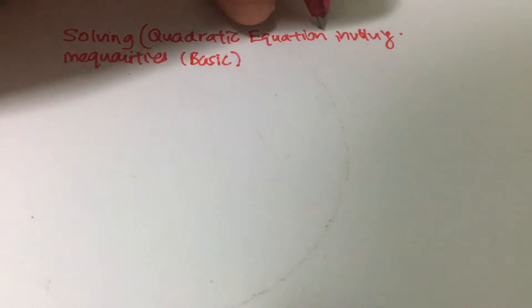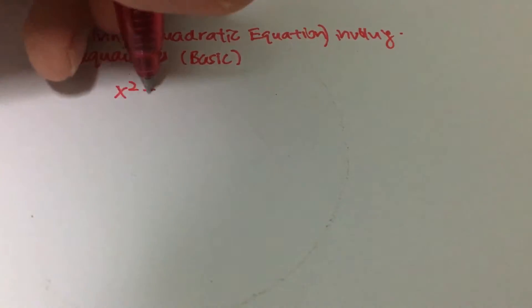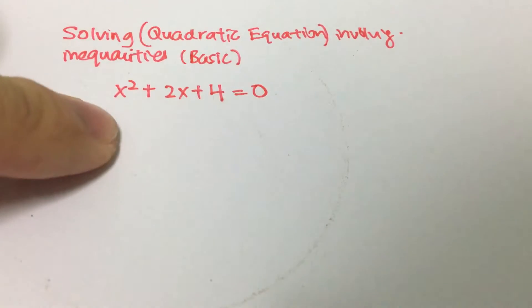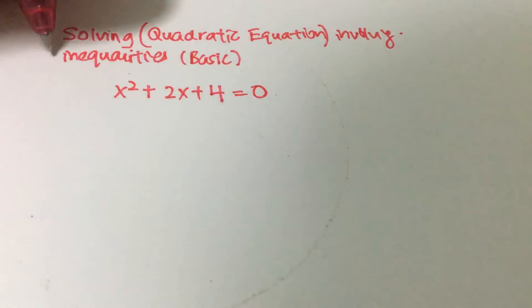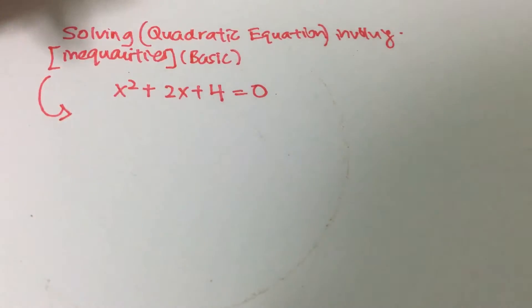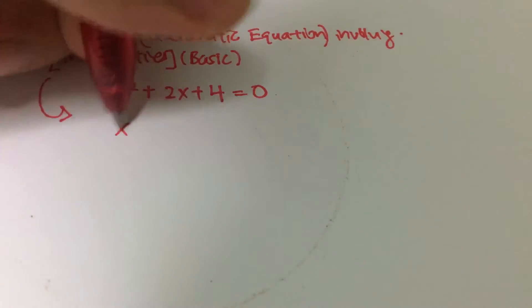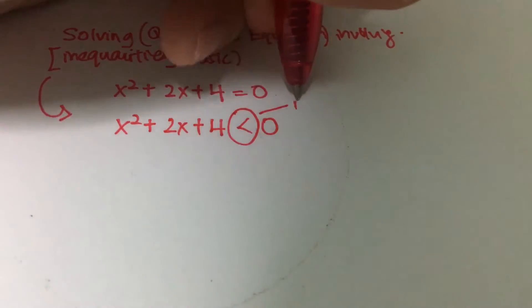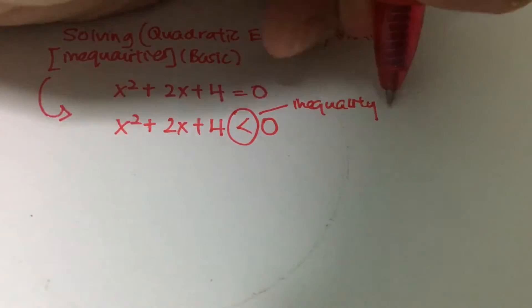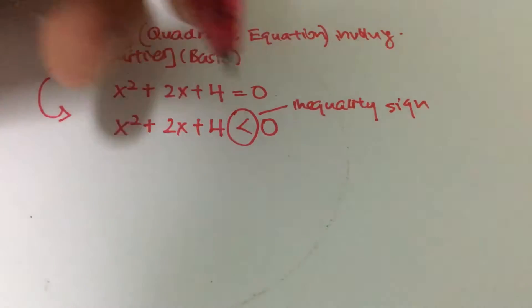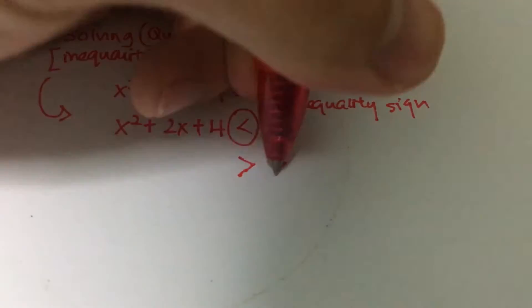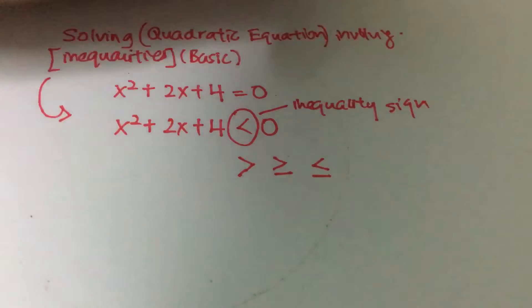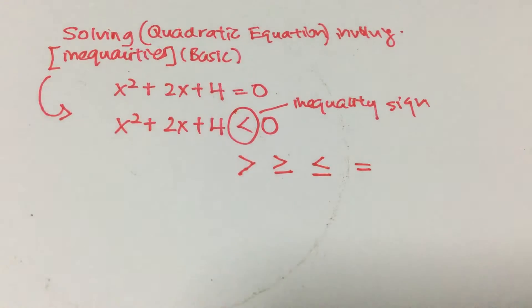First things first, what do we mean by quadratic equation? It's just something like x squared plus 2x plus 4 — basically that itself is a quadratic equation. And what does inequalities mean? It means a sign, so if I were to have x squared plus 2x plus 4 smaller than zero, this is what we call the inequality sign. There are actually various inequality signs such as greater than, greater than or equal to, or smaller than or equal to. So there are actually four or five different signs. Equals to is also considered an inequality sign.